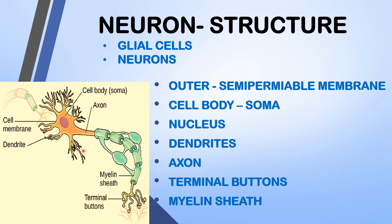The smaller branches are known as dendrites and the main extension is known as the axon. In some axons, the glial cells form a fatty substance known as the myelin sheath. It acts as an insulator and helps increase the speed at which the signal travels. At the end of the axon, there are terminal buttons. In these terminal buttons, vesicles are present, and inside the vesicles, neurotransmitters are stored. This is the structure of the neuron.